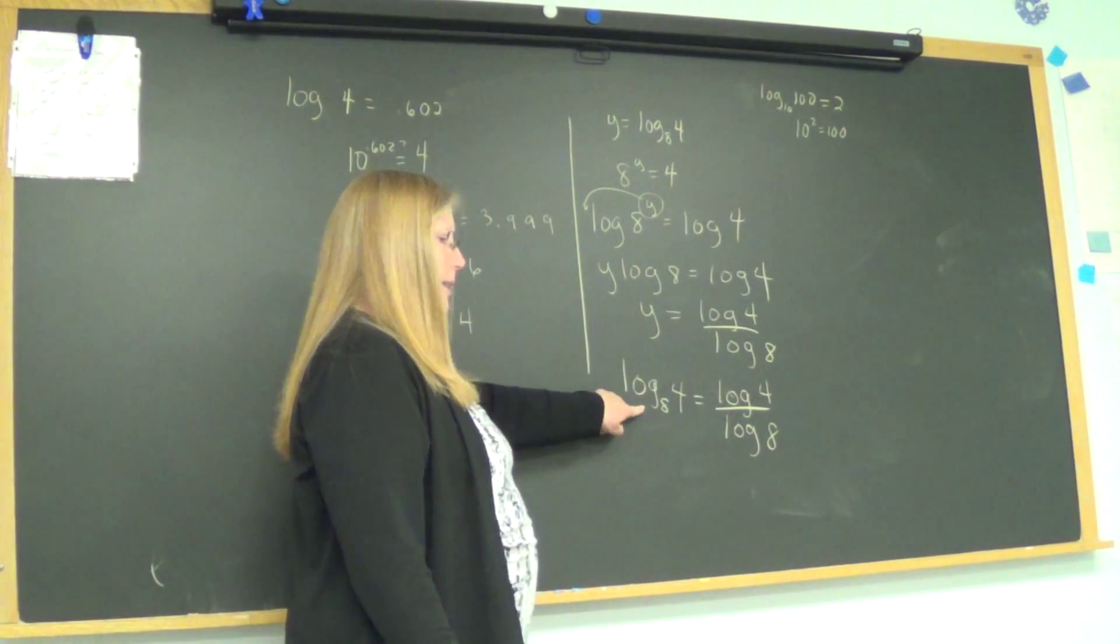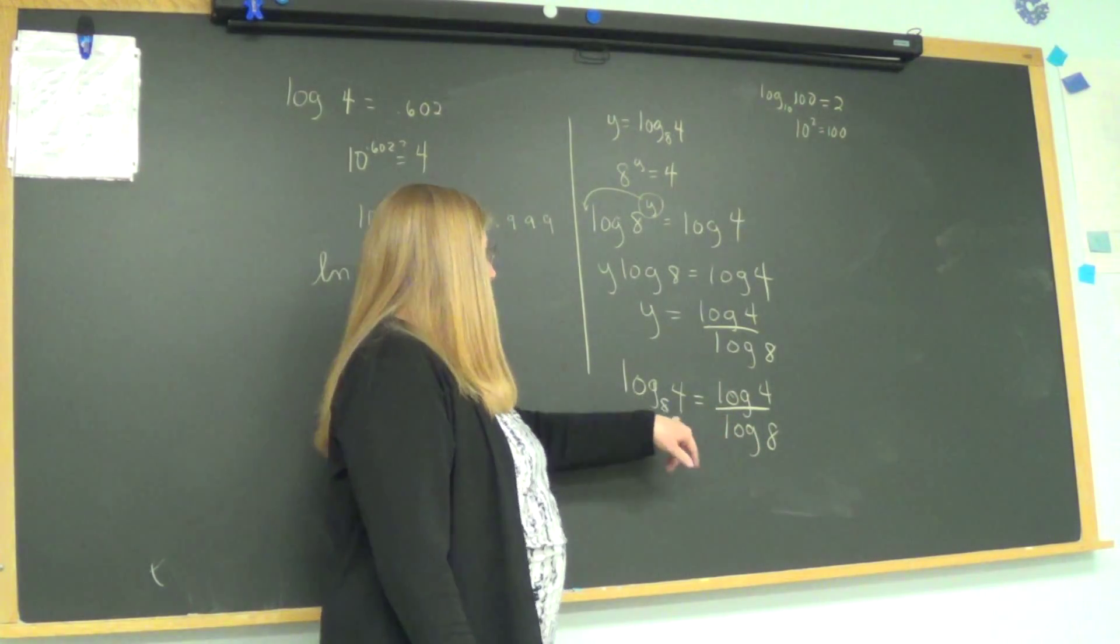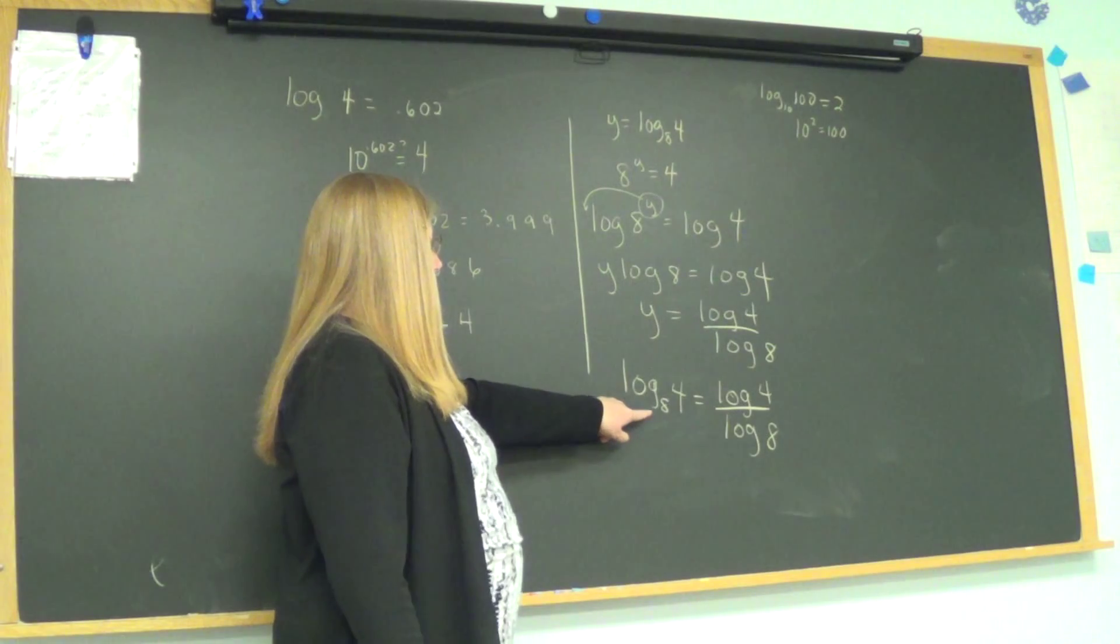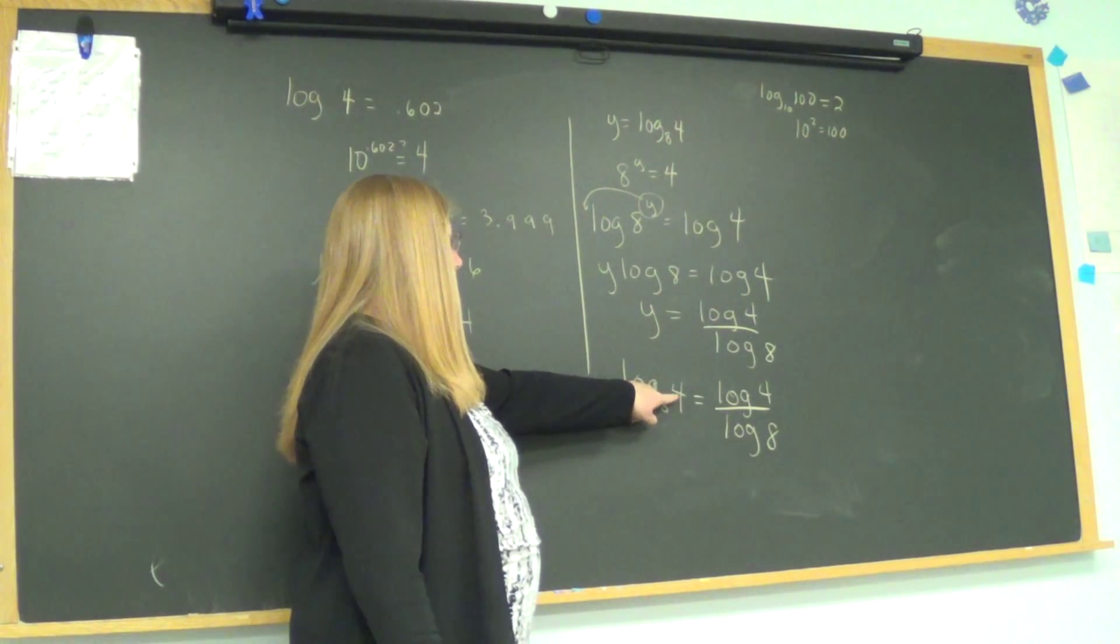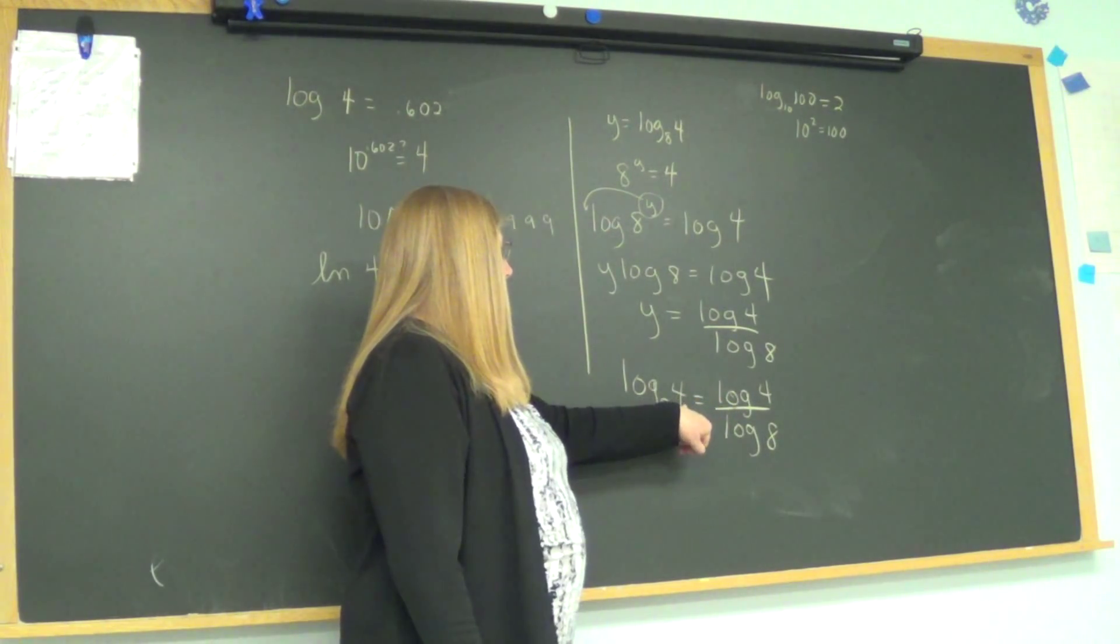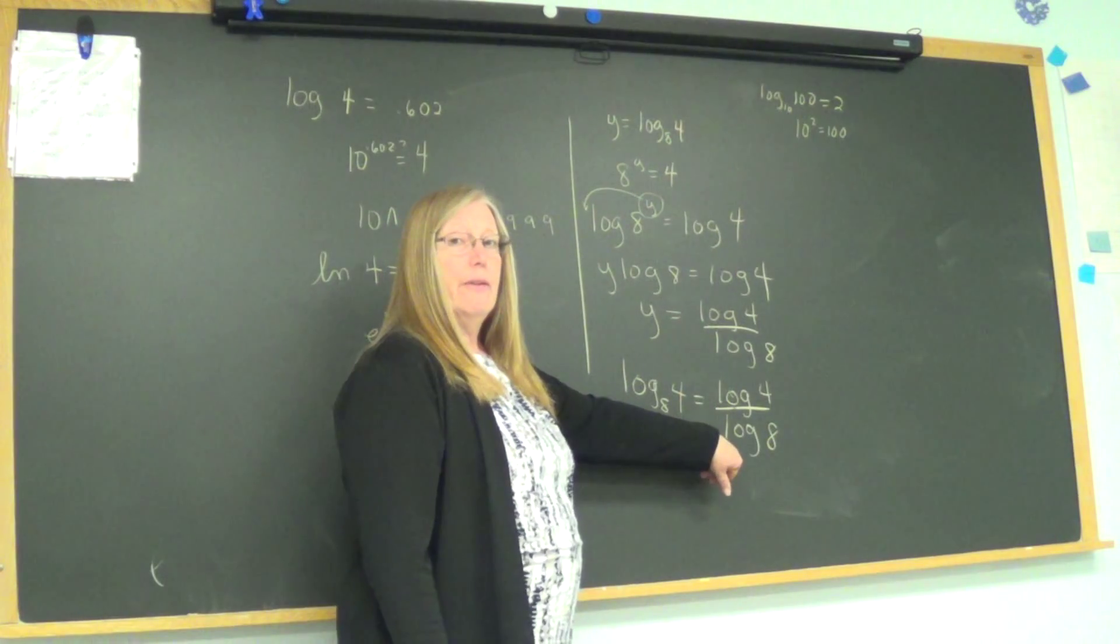So I can find this logarithm on my calculator because this is the base 10 logarithm. And notice the pattern, and it always works this way. You want log to the base 4 of 8. It's always going to be the log that you do know of this number divided by the log that you do know of this number.